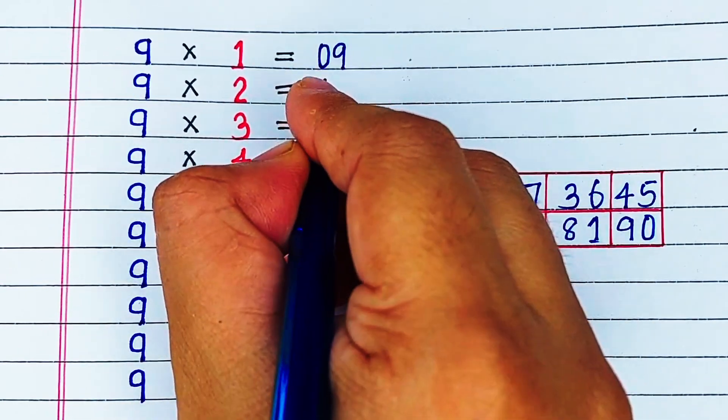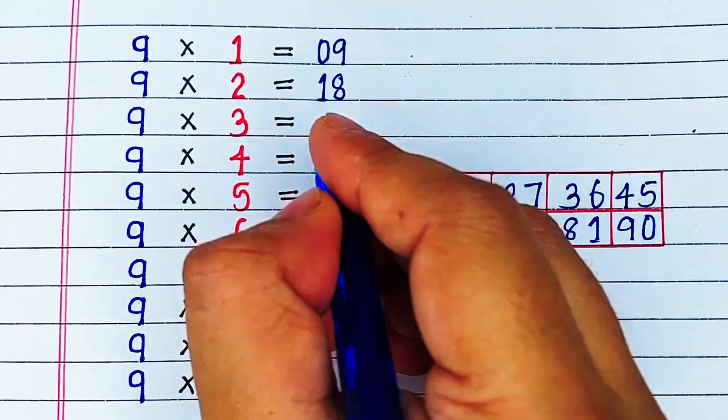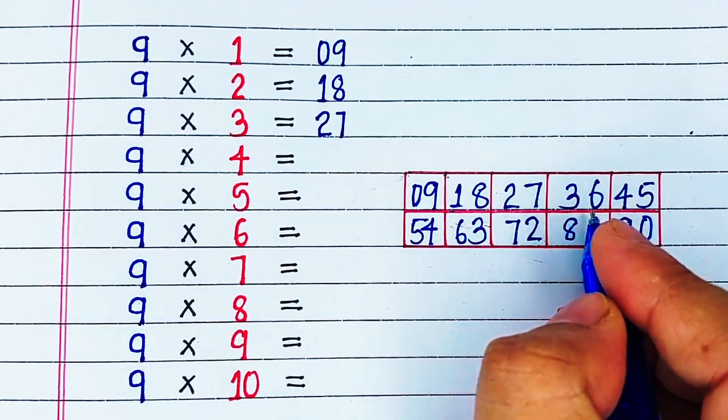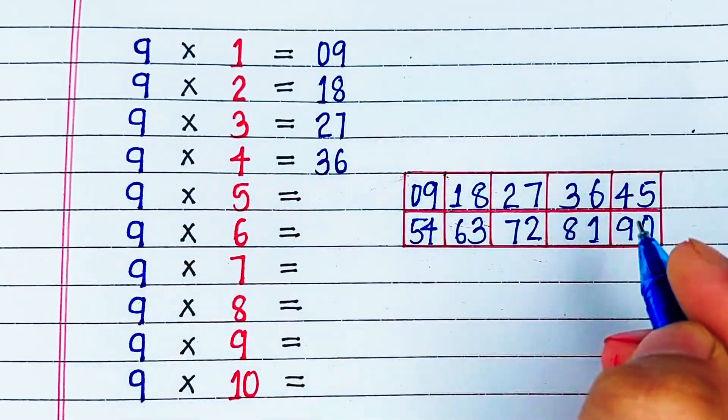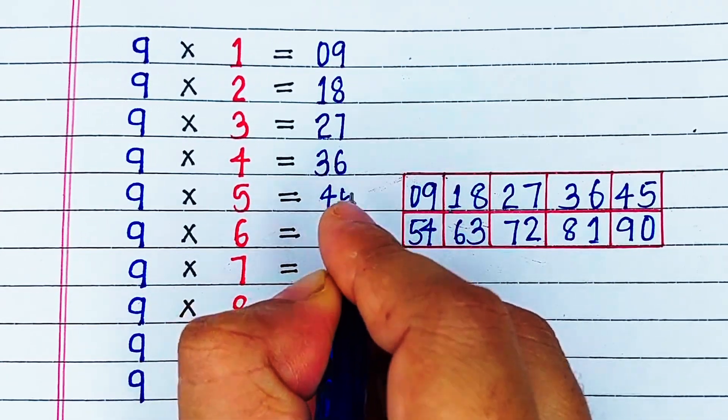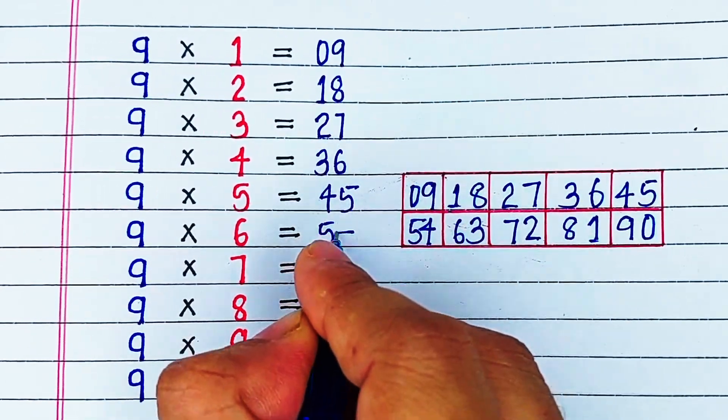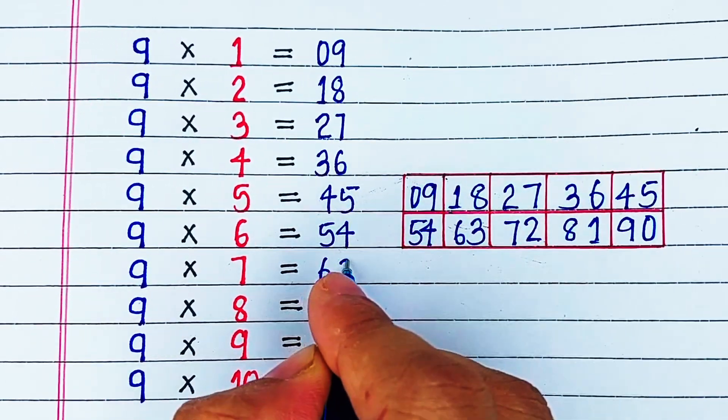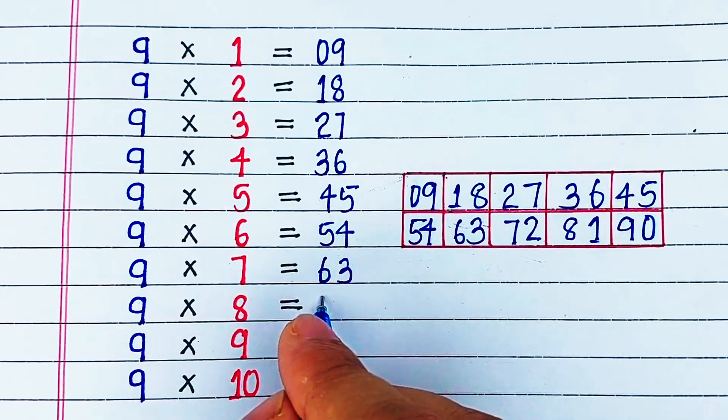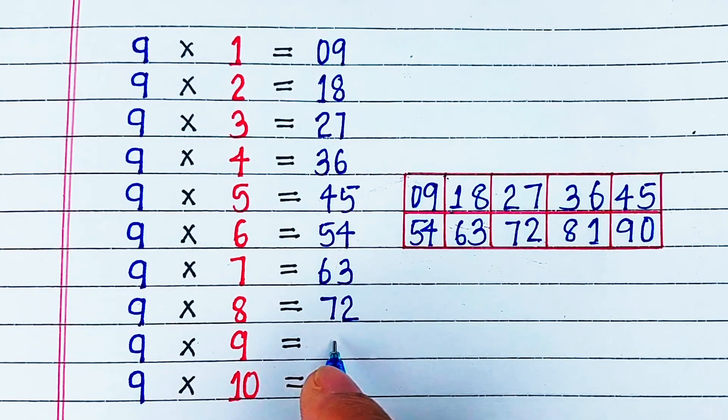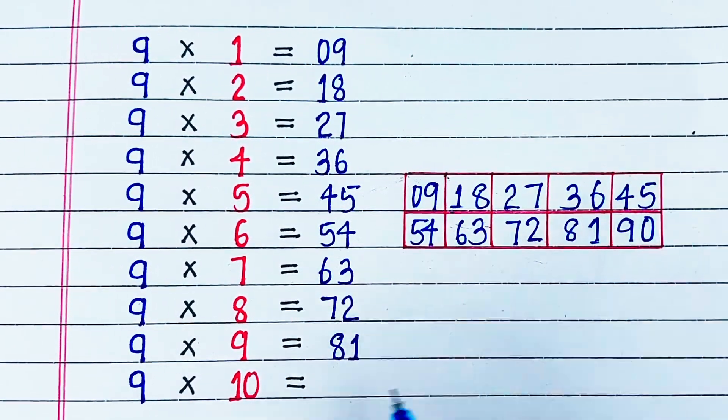Let's recite. 9 1s are 9, 9 2s are 18, 9 3s are 27, 9 4s are 36, 9 5s are 45, 9 6s are 54, 9 7s are 63, 9 8s are 72, 9 9s are 81, 9 10s are 90.